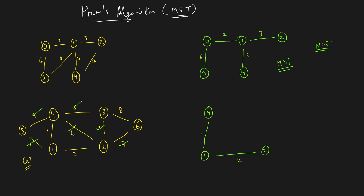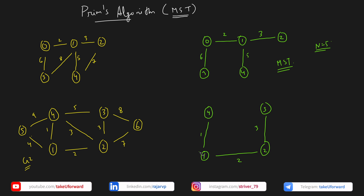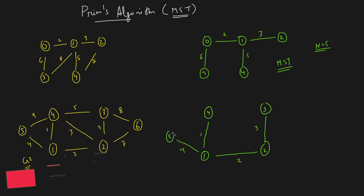Since we can't pick the edge forming a cycle, we pick the next minimal, which is 3 connecting to node 3. Now check all adjacent edges: 5, 7, 8, 4, 9, and 3. The minimal is again 3, but connecting it forms a cycle, so we skip it. The next minimal is 4, so we take that — connecting to node 5. After that, the minimal remaining is 7, so we pick it up, reaching node 6.